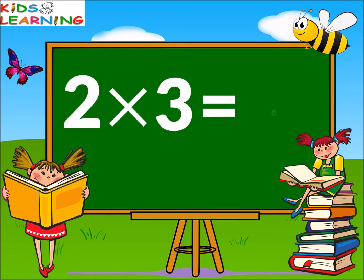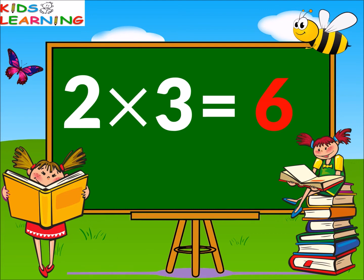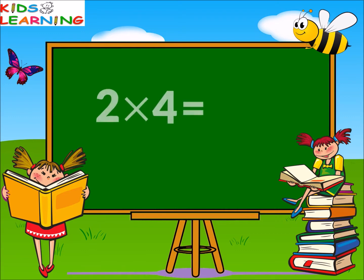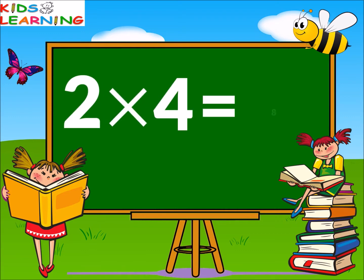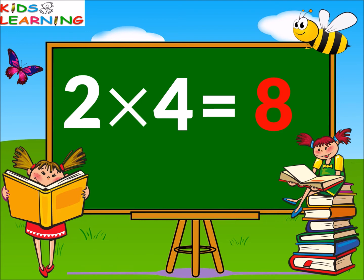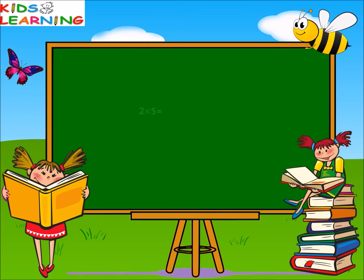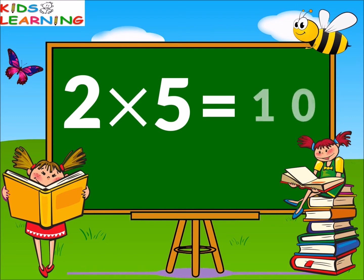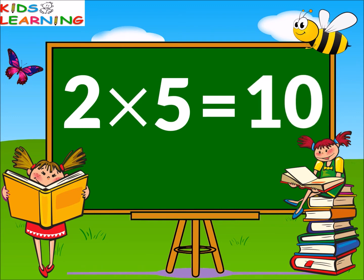Two threes are six. Two fours are eight. Two fives are ten.